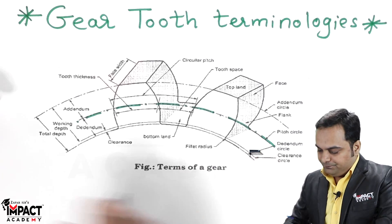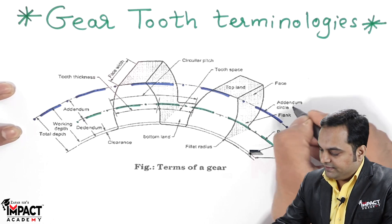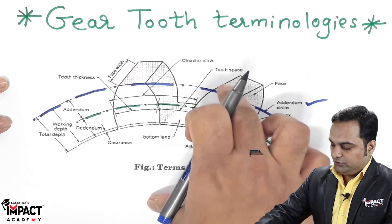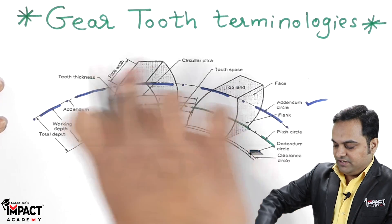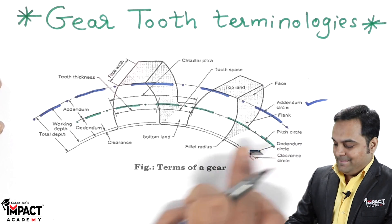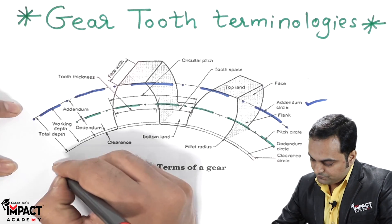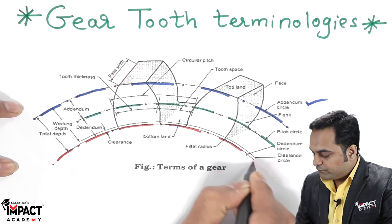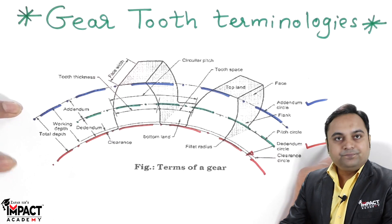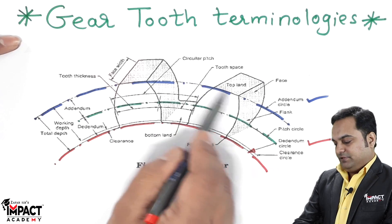Those two diameters are the addendum diameter, also called the addendum circle — the addendum circle is taken from the center up to the top of the teeth, the radius is taken and then the circle is drawn. It is greater than the pitch circle diameter. At the same time we have the dedendum circle, which is at the bottom.